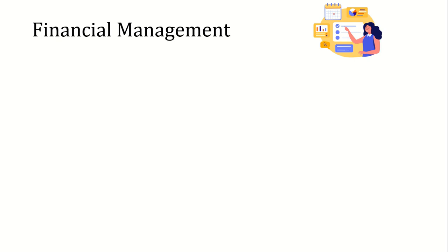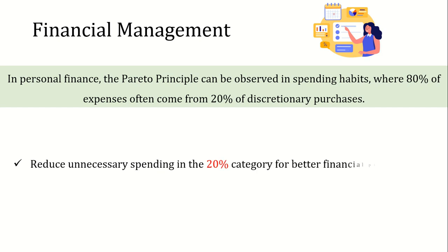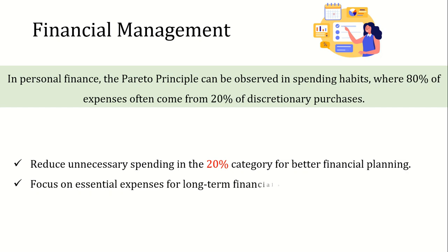The next topic is personal finance management. In personal finance, the Pareto Principle can be observed in spending habits, where 80% of expenses often come from 20% of discretionary purchases. You should achieve better financial planning and savings by identifying and reducing unnecessary or excessive spending in the 20% category, while prioritizing essential expenses that contribute to long-term economic stability and goals.